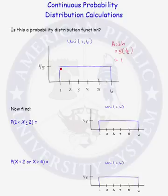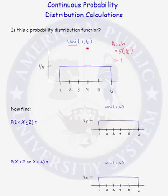A probability distribution function that is rectangular in nature has a special name — it's called the uniform distribution. This one is uniform on the region 1 to 6. Now let's find the probability that in a Uniform(1, 6) distribution, the random variable is between 1 and 2.